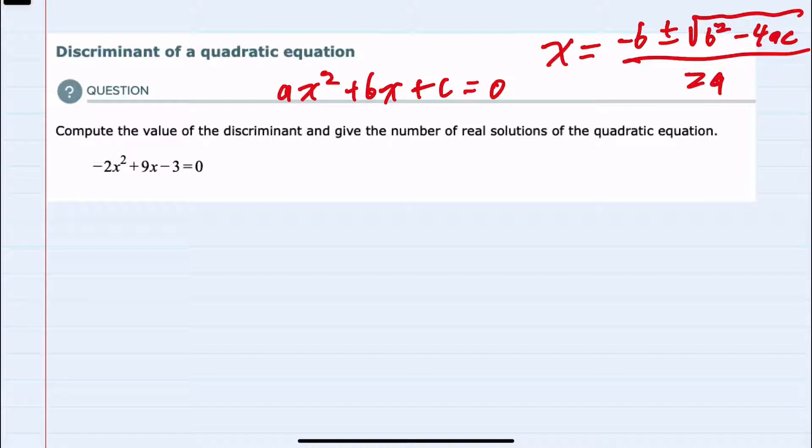And here, since we are looking only at the discriminant, the discriminant is the part underneath the radical. So our discriminant is just b squared minus 4ac.